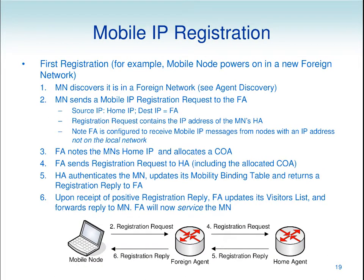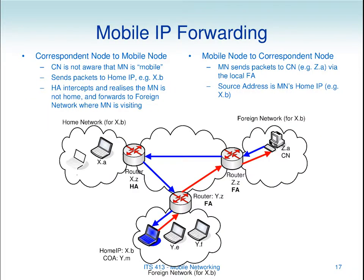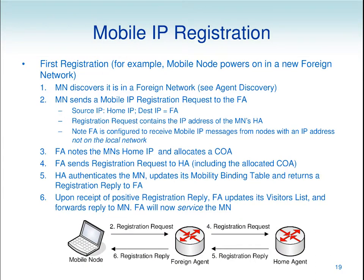Registration. This is the process: my x.b mobile node has entered a foreign network. I need to tell the home agent that I've entered this foreign network — that's the registration procedure. I also need to tell the foreign agent something about my node, because the foreign agent has the role of forwarding data that comes from the home agent. For example, my laptop moves into a foreign network, or I turn on the power of my laptop when I'm in a foreign network, assuming I know the address of a foreign agent.